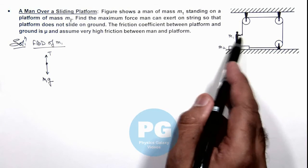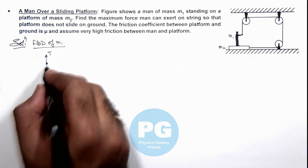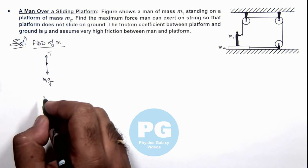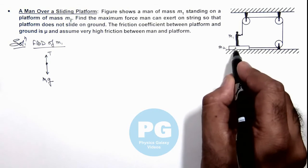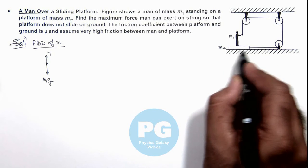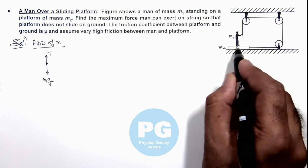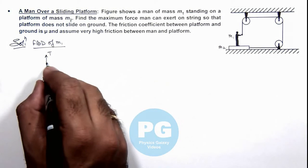When the block has a moving tendency toward the right, it will be experiencing friction toward the left, so the man will experience friction toward the right.